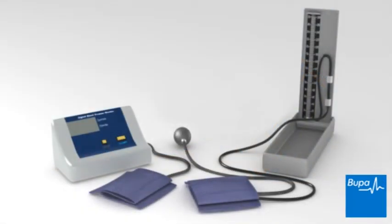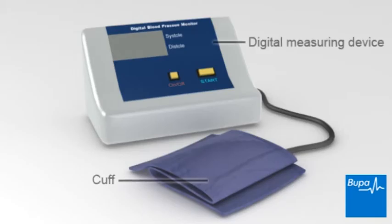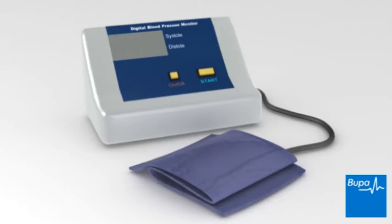You may have your blood pressure taken with a digital machine or with a sphygmomanometer. Here we show a digital machine that may be used to measure your blood pressure. The digital machine consists of a cuff attached by a tube to a digital measuring device. These are more commonly used than sphygmomanometers.